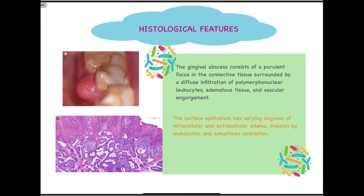Also, we might see ulceration. Mainly because there is such an amount of pressure and edema, it may result in discontinuity of the epithelium, giving rise to ulceration. The gingival abscess may become ulcerated — this might happen inherently because of the histopathological changes at the level of epithelium and connective tissue, or it might occur because the person tries to bite over that area. Any kind of trauma to such a swelling might result in ulceration of the surface epithelium.